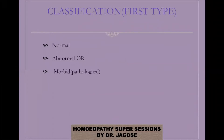So the classification — we can classify susceptibility into three broad groups or types. The first type is normal, abnormal, morbid, or pathological. In this first type of classification, we can say that the susceptibility is either normal, or it is abnormal, pathological, or morbid.